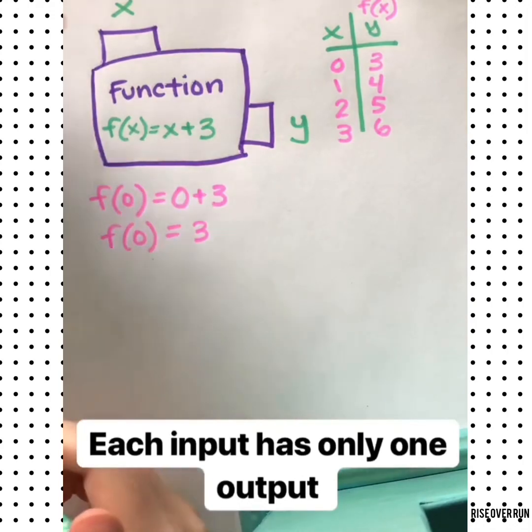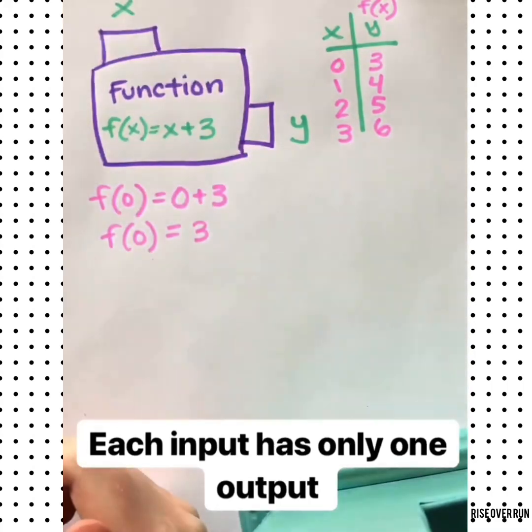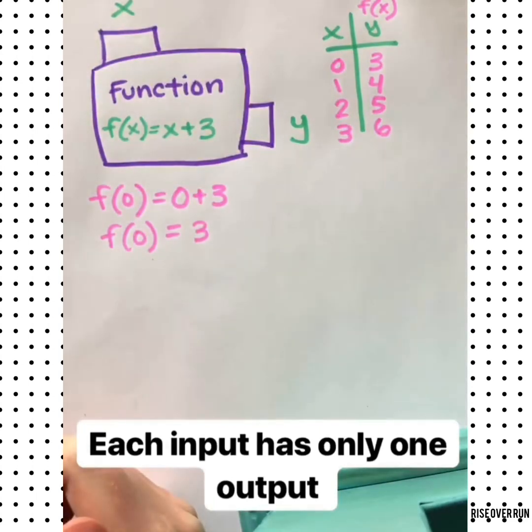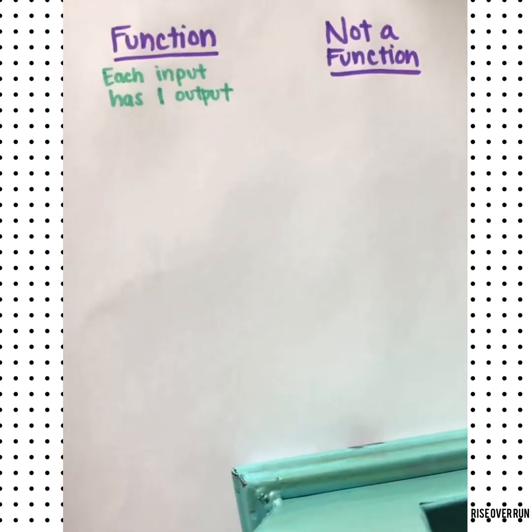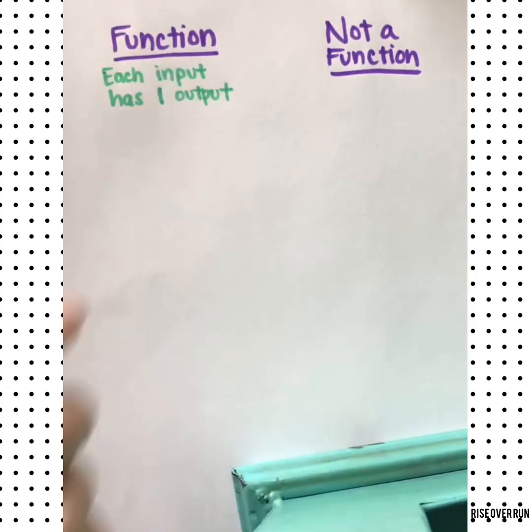The special thing that makes this a function is that every input or every x value only has one output. If I plug in a 0, there's only one possible outcome. Let's look at some examples and try to decide if they are functions or not a function. Remember, each function means that the input has one output.